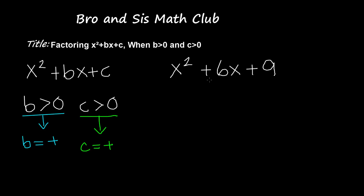So if you have 6 as the b, we know that 6 is greater than 0, so it is a positive number. And we have 9 as c, so it is greater than 0 and is also a positive number.